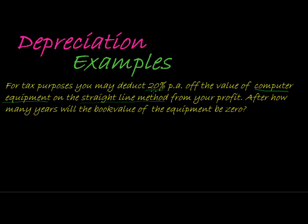Okay, so just with a little bit of background, don't worry about it. You don't need to know that for the exam, but just for understanding the background of this question. So for tax purposes, you may deduct 20% off of the value of computer equipment on the straight-line method from your profit. After how many years will the book value of the equipment be zero?